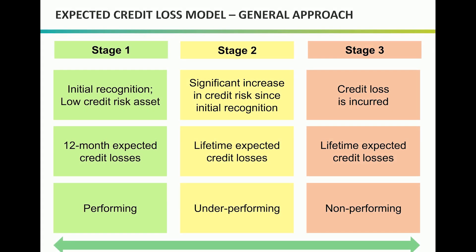There are three stages in the general approach. Financial instruments are recognized in stage one on initial recognition and subsequently until there is a significant increase in credit risk. Stage one also includes financial instruments that are considered to be low credit risk. The impairment allowance on financial instruments in stage one is based on 12-month expected credit losses and adjusted in every period for changes in the risk of default. The 12-month expected credit loss is equal to lifetime expected credit loss times probability of default in the next 12 months.